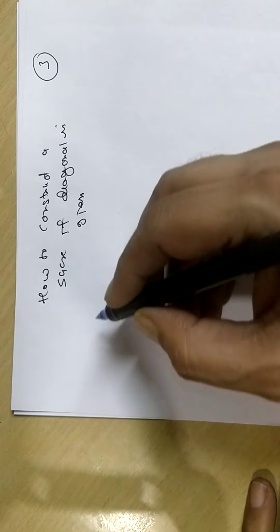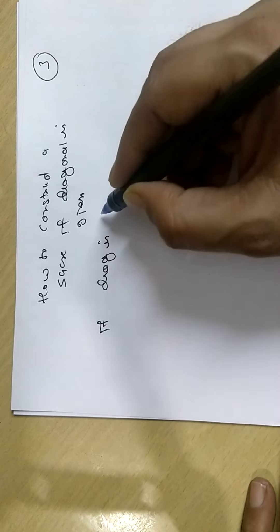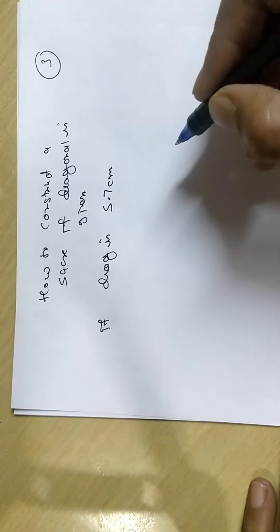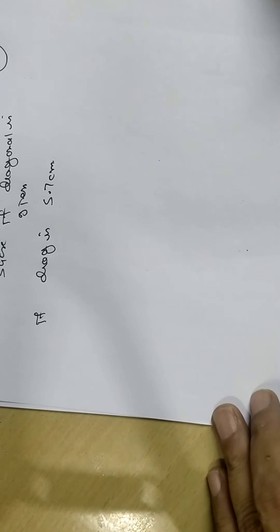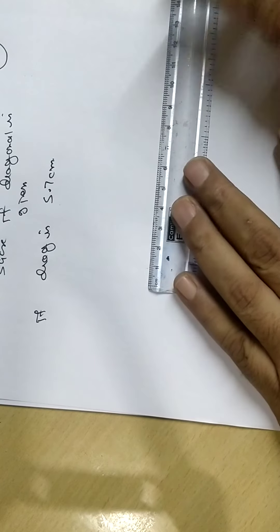For example, if diagonal is 5.7 cm, I have to consider a square. First, you draw 5.7.